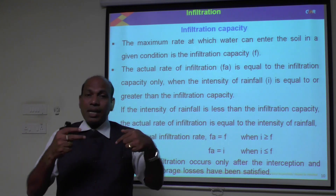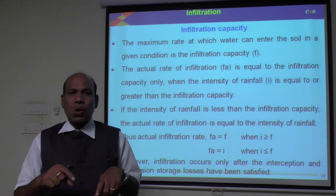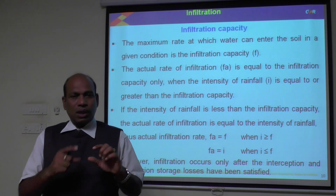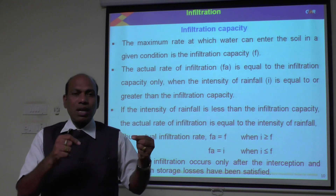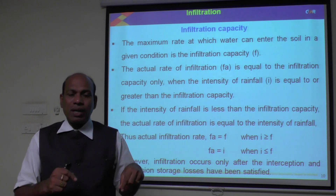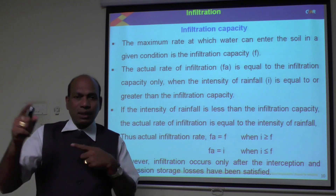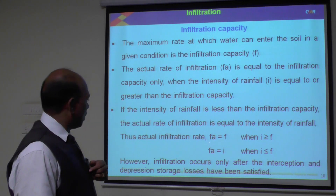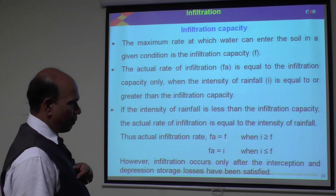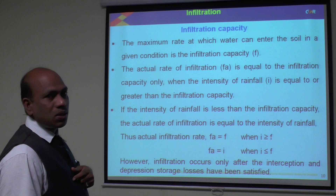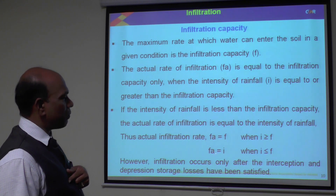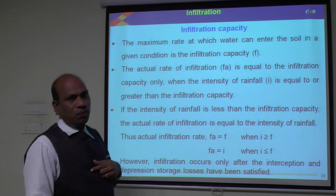Otherwise, if the rainfall intensity is less than the infiltration capacity of the soil — for example, infiltration capacity is 10 mm per hour but rainfall intensity is 8 mm per hour — the actual rate of infiltration is only 8 mm per hour, because the rainfall intensity is less than the infiltration capacity. When rainfall intensity is less than infiltration capacity, the actual rate of infiltration equals the rainfall intensity.